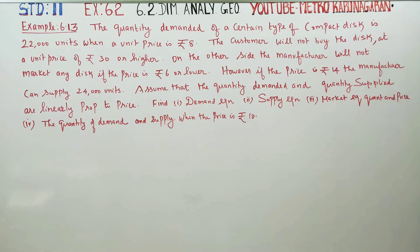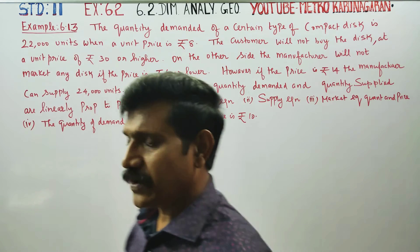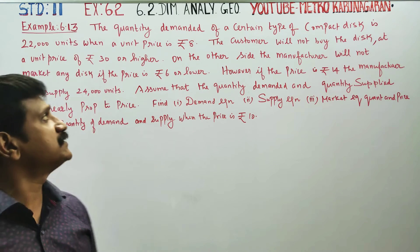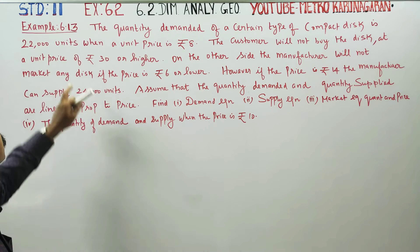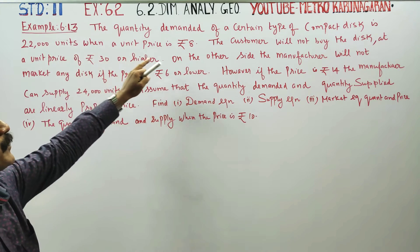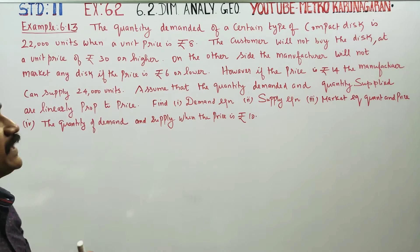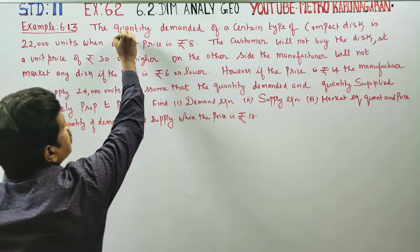Dear 11th standard students, I am Mitru Karanagaran. In example 6.13, the quantity demanded for a certain type of compact disc is 22,000 units when the unit price is Rs.8.